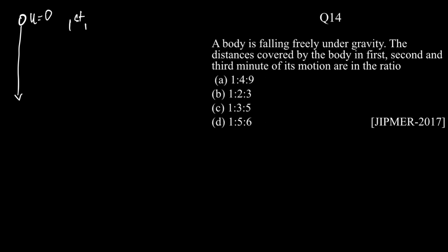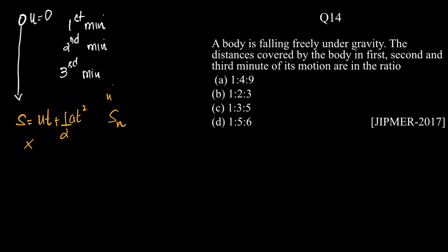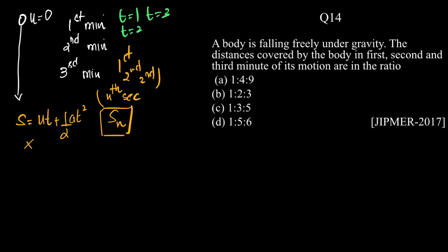The time intervals are the first minute, second minute, and third minute. Which formula do we take? We don't take S = ut + ½at². Instead, we use Sₙ, which is the displacement in the nth second, or nth minute, or nth interval of time — in this case the first, second, and third. If we were given t=1, t=2, t=3 as total times, we'd use S = ut + ½at², but here we use Sₙ.